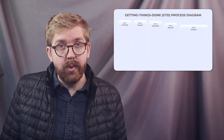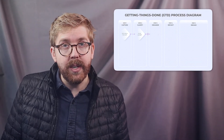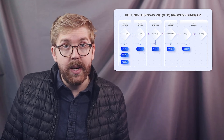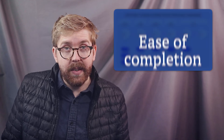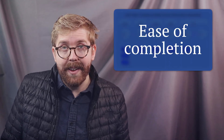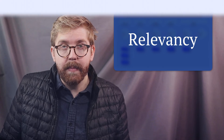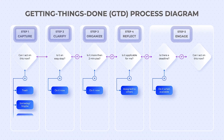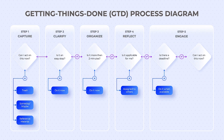The Getting Things Done flowchart helps prioritize tasks at hand and shows what to tackle first based on urgency, ease of completion, and relevancy. For each task on your to-do list, run it through this flowchart to see if it should be done right away, saved for later, or handed off to someone else. It won't be long before the to-do list is a done list.